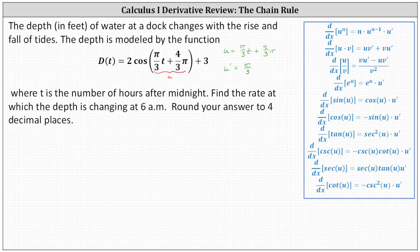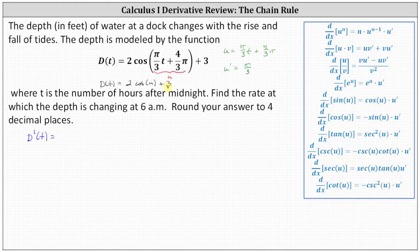So now, if it's helpful, we can think of the given function d of t as just d of t equals two cosine u plus three. Looking at our notes on the right, the derivative of cosine u with respect to x is equal to negative sine u times u prime, which indicates d prime of t is equal to two times negative sine u.